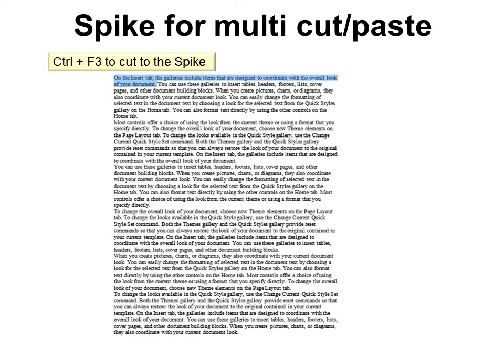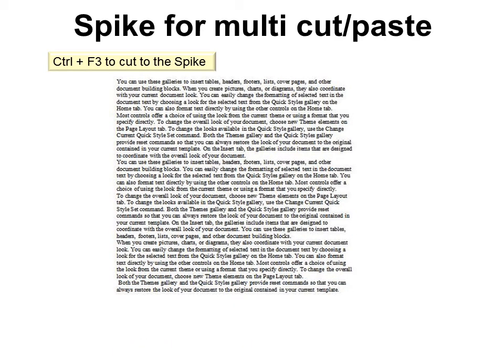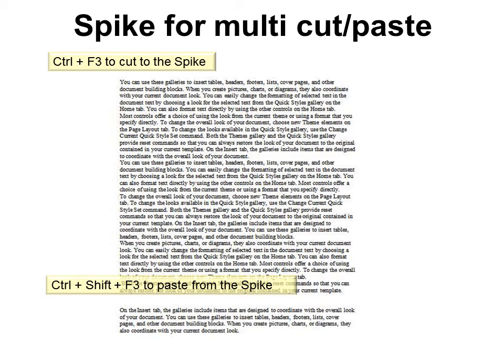Another great tool if you're cutting a lot of text to move elsewhere is the Spike. It only cuts — it does not copy. Use Ctrl+F3 to cut text into the spike, and you can do this multiple times, accumulating several items. Then use Ctrl+Shift+F3 to paste all of them in the order you cut them. Remember it is cut, not copy, so it removes the original text. If you don't want to paste right away, you can find the spike content later in the Building Blocks Organizer.